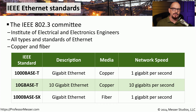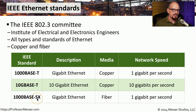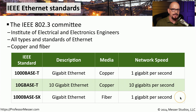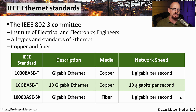There are also ethernet networks that use fiber optics. An example of that would be 1000BASE-SX, which is a gigabit ethernet network that uses fiber optics and operates at a speed of 1 gigabit per second. This is just a sample of a few of the more popular ethernet standards, but there are many ethernet standards to choose from using different types of media and supporting different speeds.